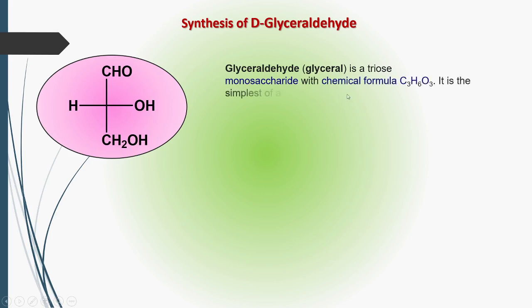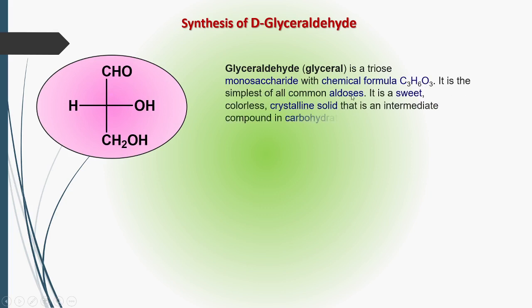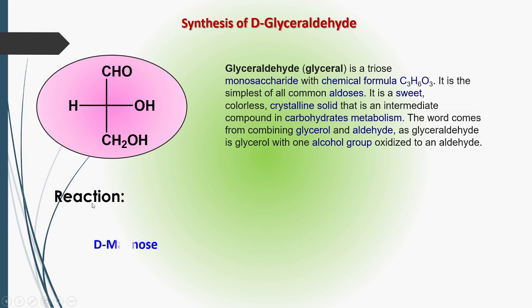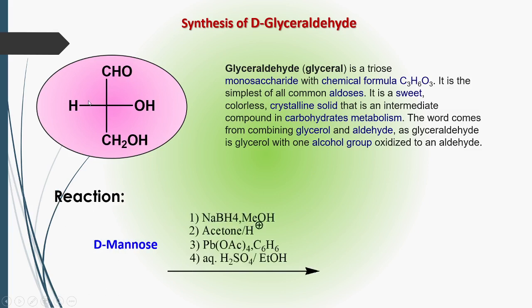Glyceraldehyde, or glycerol, is a triose monosaccharide with the chemical formula C3H6O3. It is the simplest of all common aldoses — a sweet, colorless crystalline solid that is an intermediate compound in carbohydrate metabolism. The word comes from combining glycerol and aldehyde. Glyceraldehyde is a glycerol with one alcohol group oxidized to an aldehyde; if we write CH2OH it is a glycerol molecule, and after oxidizing that alcohol we get the aldehyde.